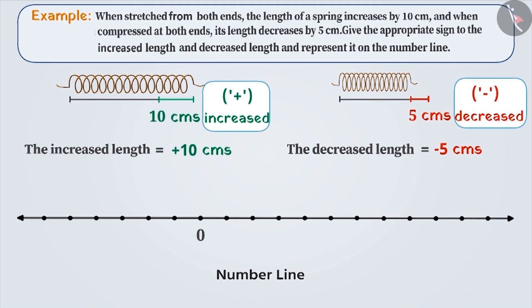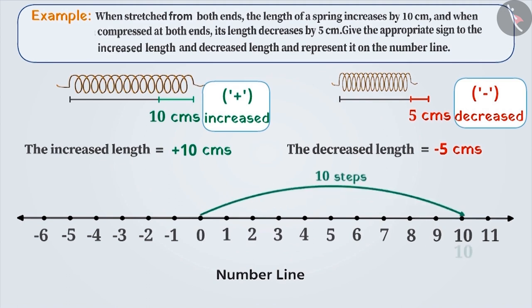Let me explain. All positive integers on the number line are expressed to the right of 0 and all negative integers to the left of 0. Since plus 10 is a positive integer, to express it, we will move 10 steps to the right of 0. Similarly, to express minus 5 on the number line, we will move 5 steps to the left of 0 and express minus 5.